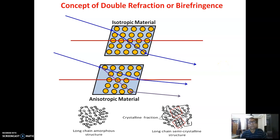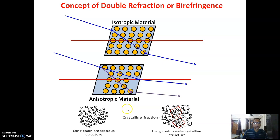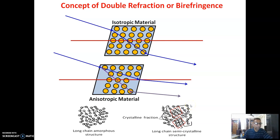This is the concept of double refraction or birefringence. In an isotropic material, all atoms are placed homogeneously with uniform density throughout. In an anisotropic material, the material density is different at different places, causing double refraction. A completely amorphous structure falls under the isotropic category, while a semi-crystalline material becomes anisotropic in nature.